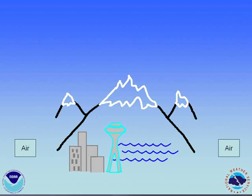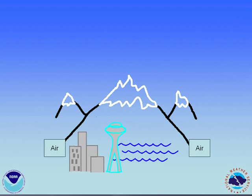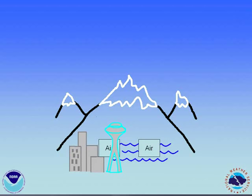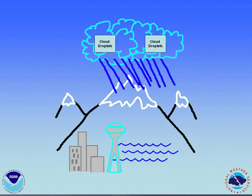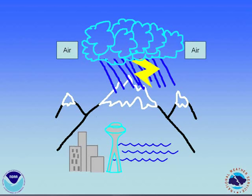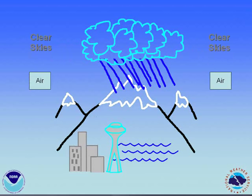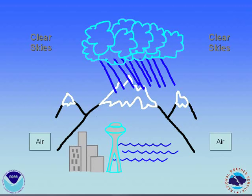This short cartoon will show you how the convergence causes clouds and precipitation in some areas, and clearing in other areas. After the air has traveled around both sides of the Olympics, it curves toward the Seattle area, often north of the city proper. Once the air collides, it begins to rise. As the air rises, it reaches its dew point and clouds form. When the cloud droplets get big enough, they fall out as rain or snow. The air is then pushed out the sides of the clouds and descends to the north and south of the convergence zone area. Since the air has lost some of the moisture and it is warming as it descends, clear sky areas can be seen.